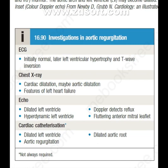The table shows the investigations in aortic regurgitation. In ECG, it may be initially normal; later, left ventricular hypertrophy and T wave inversion may occur. In chest X-ray, there may be cardiac dilatation, aortic dilatation, and features of left heart failure. In echo, there are presence of dilated left ventricle, hyperdynamic left ventricle where Doppler detects reflux, and fluttering anterior mitral leaflet.